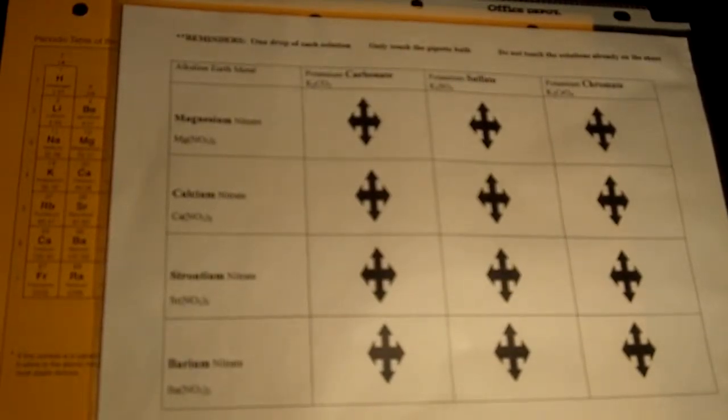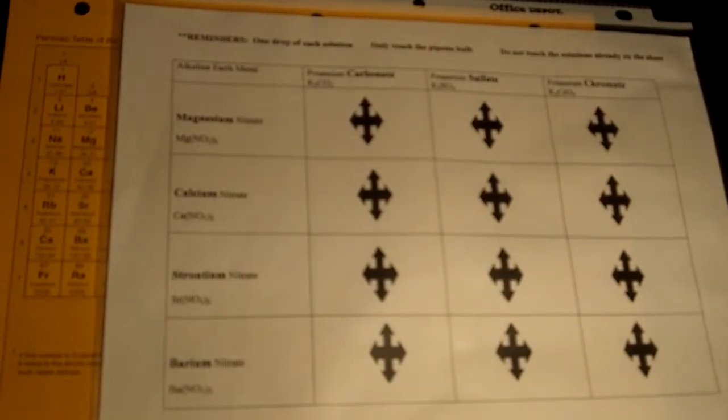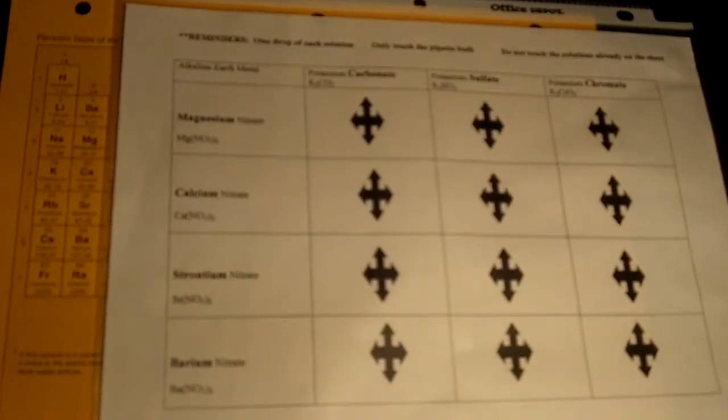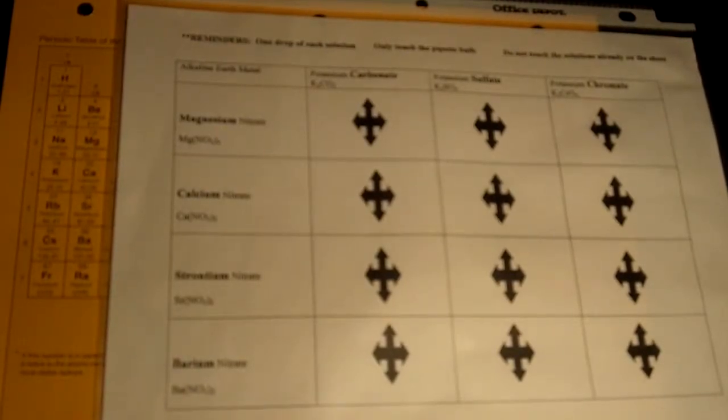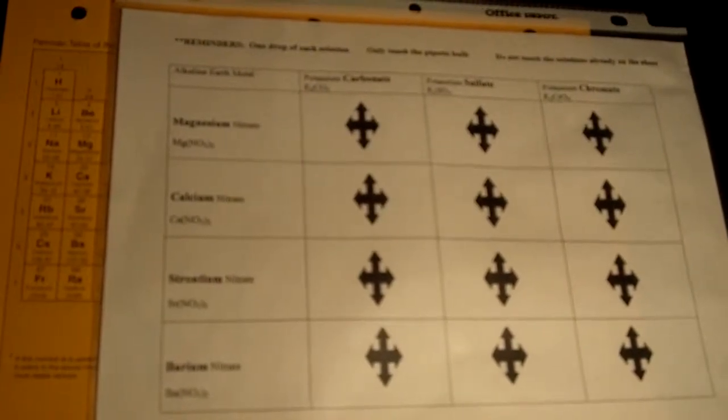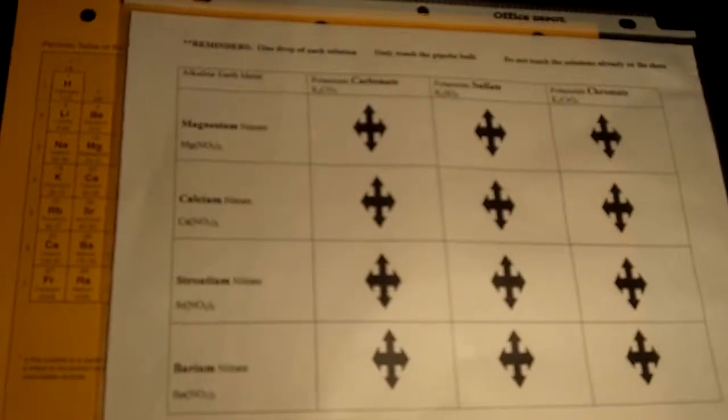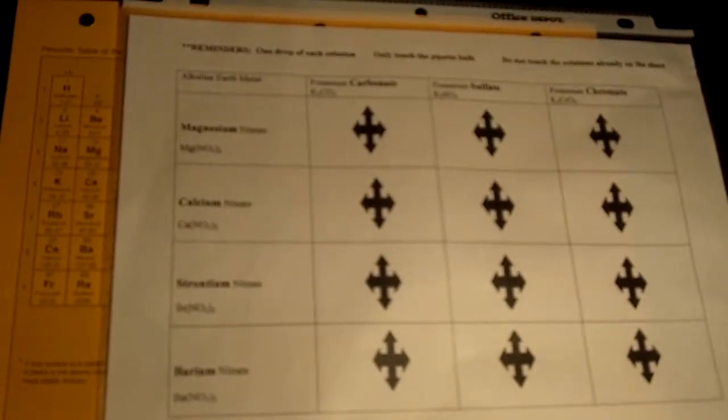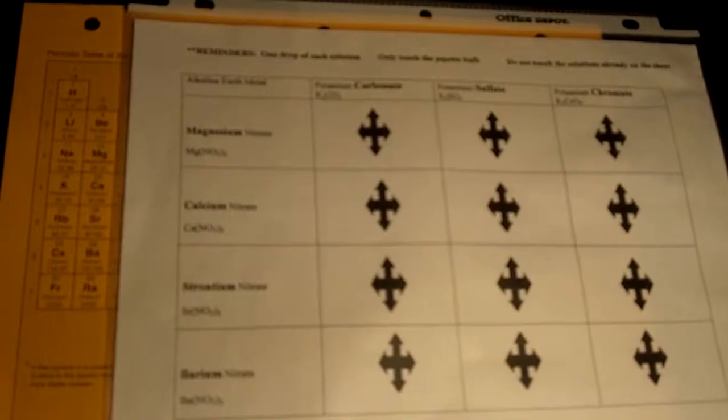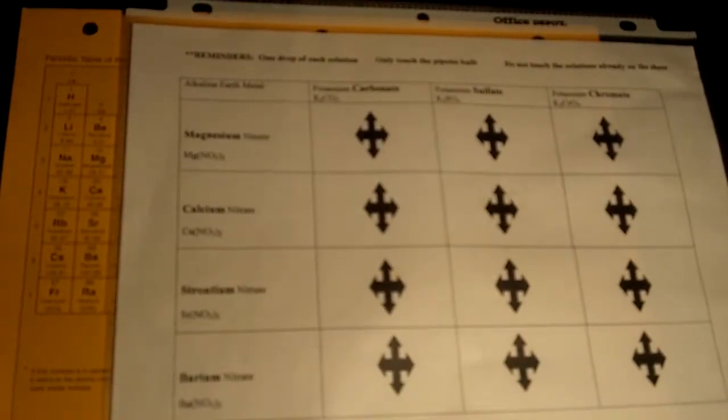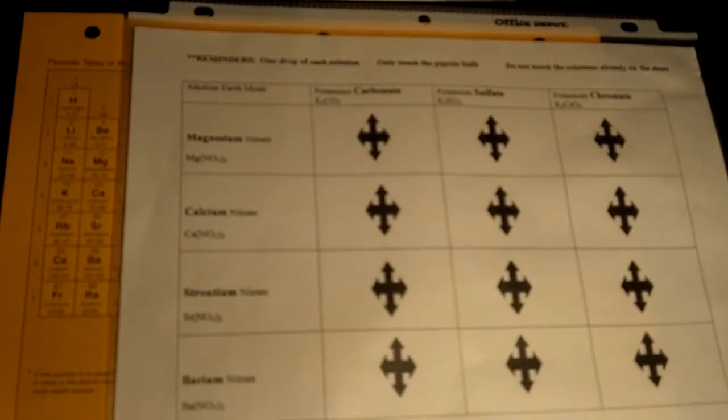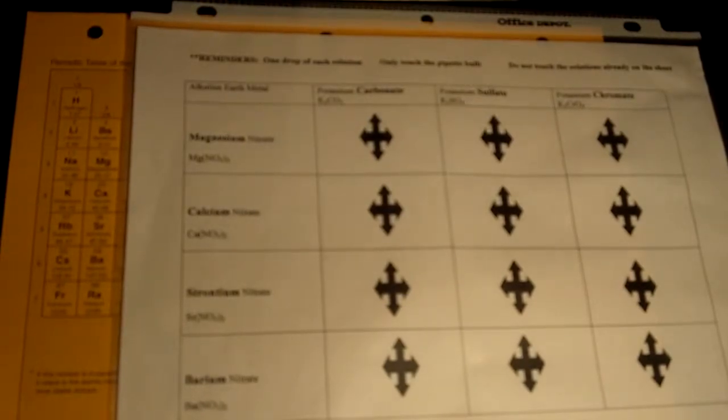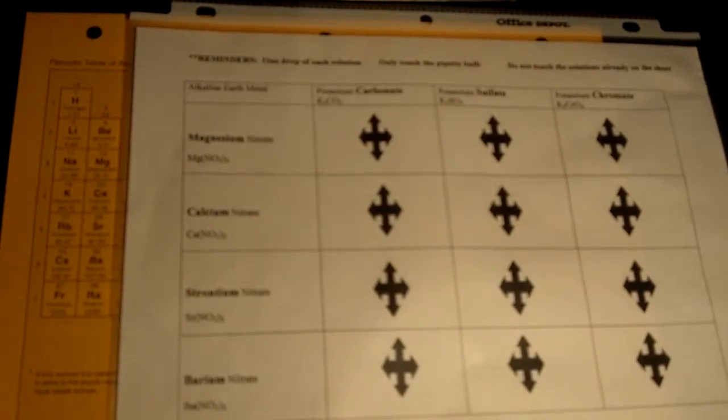The procedure. Alright, so for the procedure here, I'm going to keep this as simple as possible. The first thing we're going to do is load up the reaction surface, which is basically just a sheet protector. We're going to load up the reaction surface with the potassium compounds. When you do that, you want to put just simply one drop on the reaction surface. It's very important, though, that when you do this, that you do not touch the pipette to the reaction surface, and that you do that in order to avoid contaminating it.